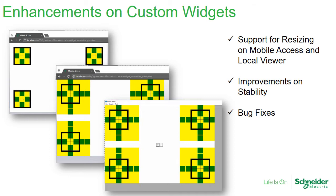What we did is this: on the custom widgets, when you insert a custom widget on the window it has a set size for which it's going to be designed. But now we implemented the capability of resizing the custom widgets. As you can see on the first screenshot, the original sizes of the custom widgets — the yellow and green ones — that's a custom widget. On the other screenshots you have one showing mobile access with the custom widget resized, and one on our viewer module resizing as well. We also implemented some stability improvements and fixed all the bugs found on the custom widgets so far.